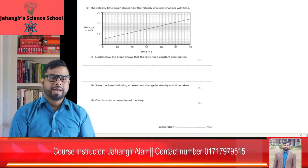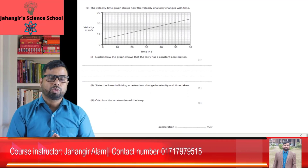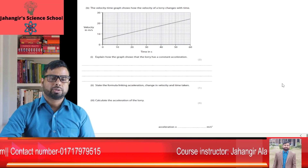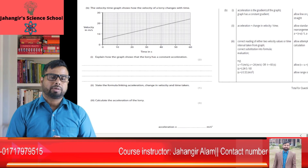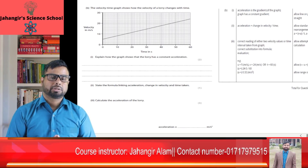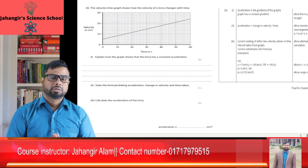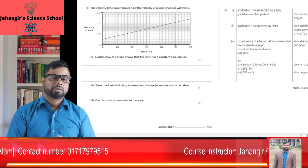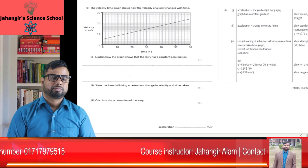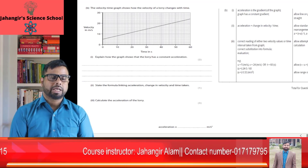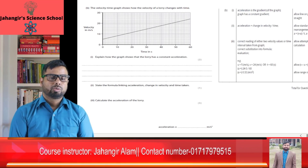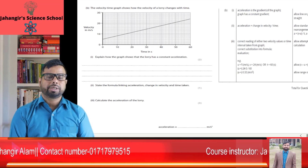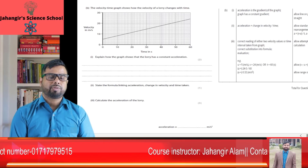Question B: The velocity-time graph shows how the velocity of the lorry changes with time. Explain how the graph shows that the lorry has constant acceleration. Acceleration is the gradient of the graph. The graph has a constant gradient because the line on the graph is a straight line. State the formula linking acceleration, change in velocity, and time taken: acceleration equals change in velocity divided by time taken, i.e., a = (v − u) / t.